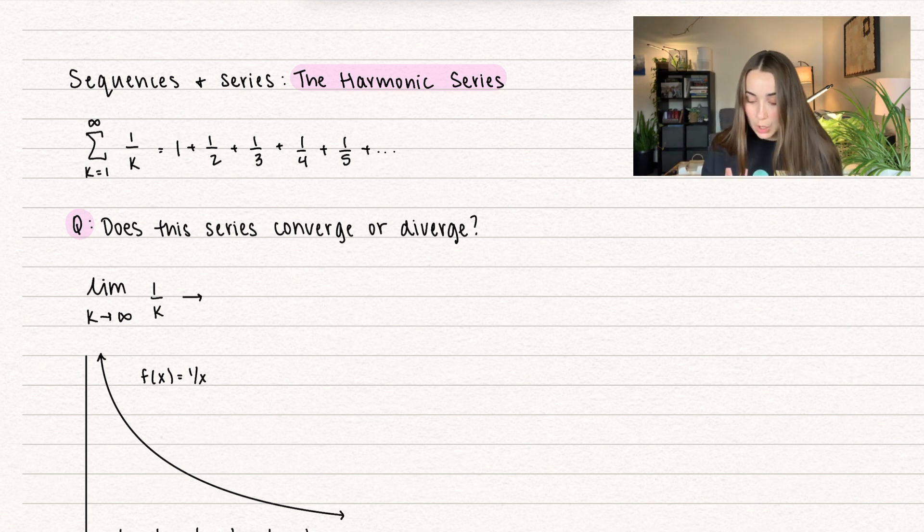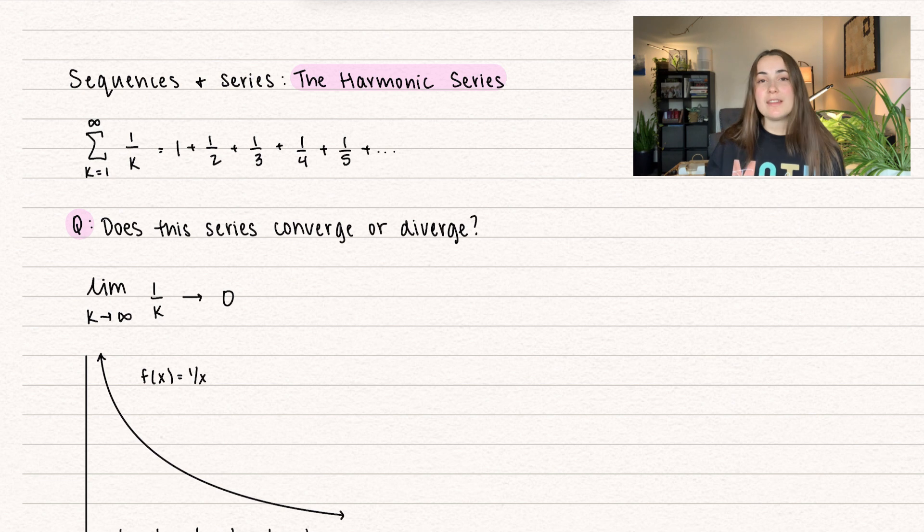Let's go ahead and think about the limit. When we take the limit as k approaches infinity of 1 over k, when k gets really big, this is going to go to 0, which is why it's a little confusing. If 1 over k converges to 0, why doesn't the series converge?